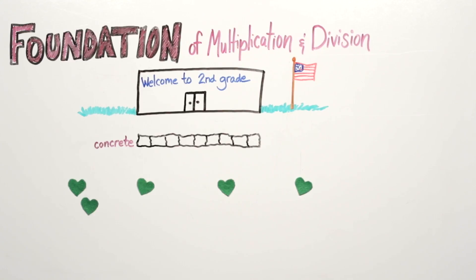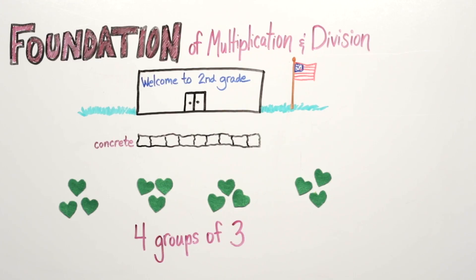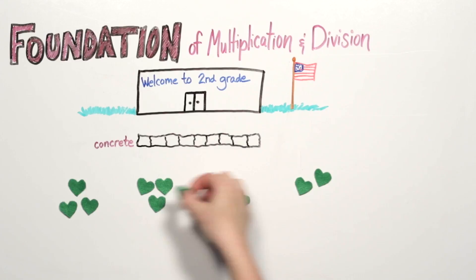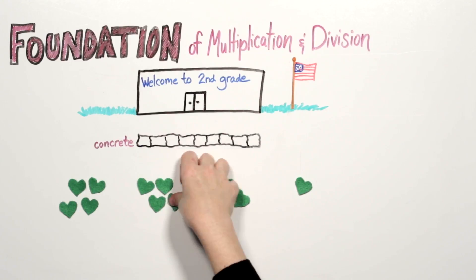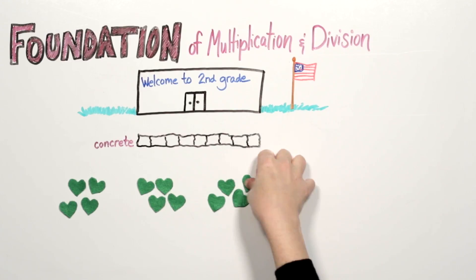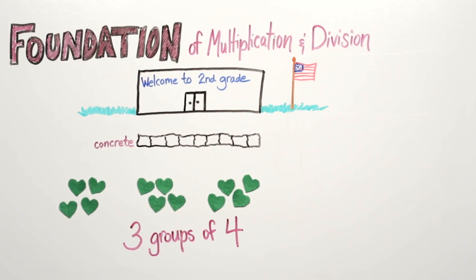Ask your child, can you make groups of three? Yes, there are four equal groups of three hearts. What happens if we make groups of four? There are three equal groups of four hearts.